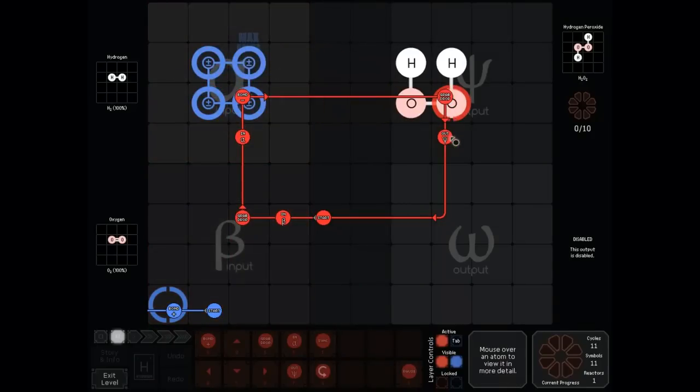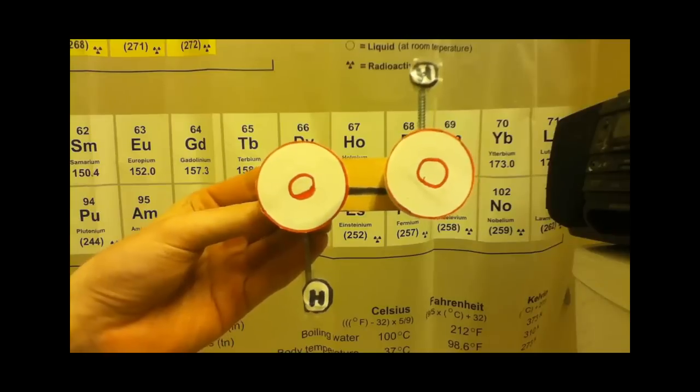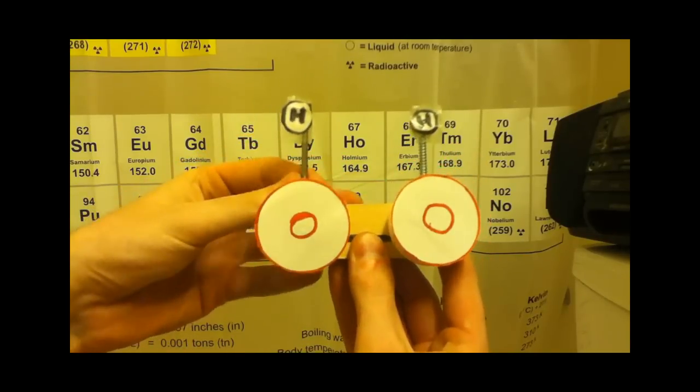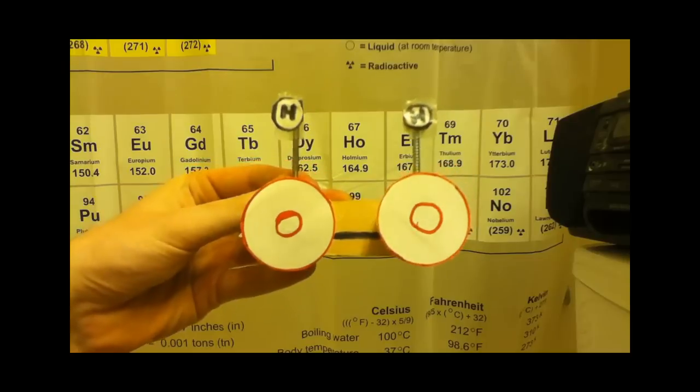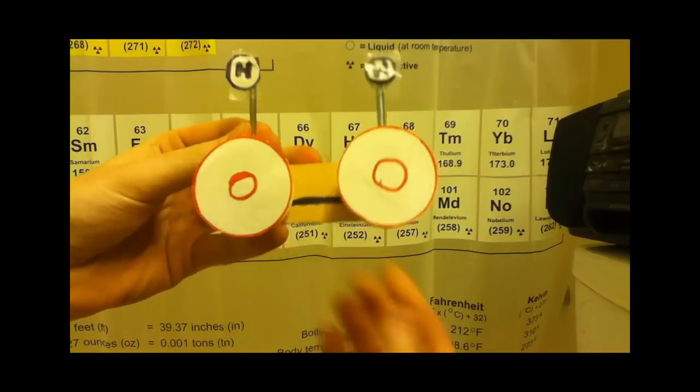Now, one more thing you might be a little confused about is, this sure doesn't look like this. How come this is a valid output? Well, it's because you can kind of rotate bonds around so you can change what the output looks like. How can I visualize this for you? So this is hydrogen peroxide as the level wants you to output it, and this is how I outputted it. It's the same thing. Just this one hydrogen is just rotating a bit.